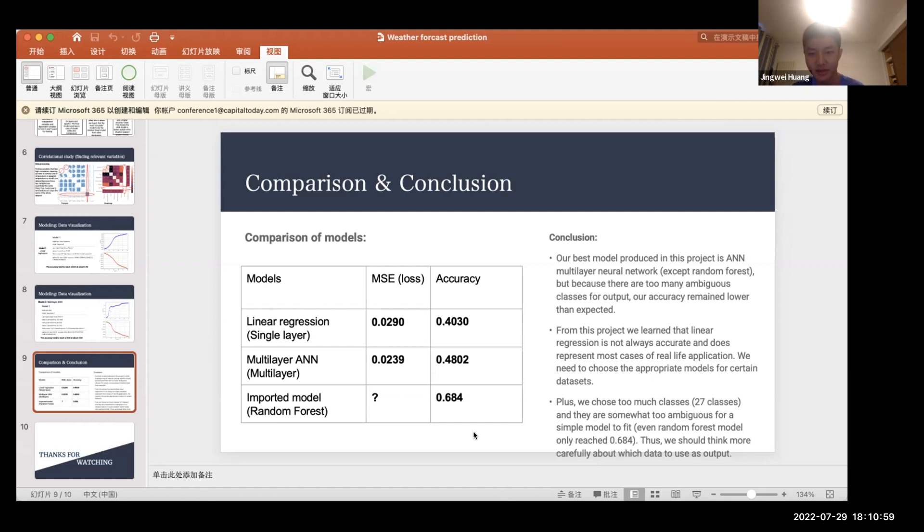So we imported another model as a reference called Random Forest. Its accuracy is almost 70% on this model. So because of this, it seems that the first two models are not accurate enough.